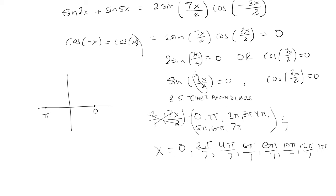So that is just for this first factor. Now we have to consider when cosine 3x over 2 is equal to 0. Cosine is equal to 0 at pi over 2 and 3 pi over 2. The coefficient is 3 over 2, that means it's 1 and a half times around the circle.